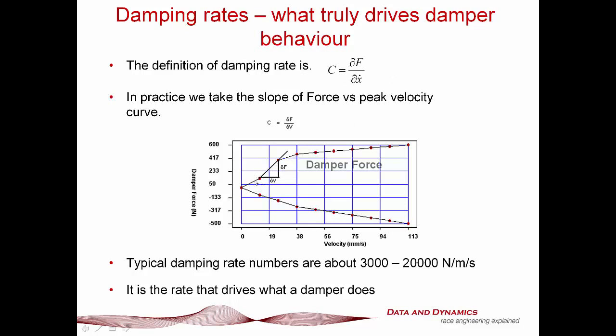The damping rate is the change in force over the change in velocity — that is the slope of the force-velocity graph. That slope dictates everything that goes on with your damper. If you've got an increased damping rate, the force follows as a consequence. But if all you've done is add more gas pressure or simply shifted the curve up or down, you haven't increased the damping — you've only changed the preload. That is a huge misconception.